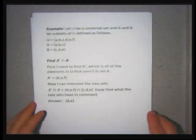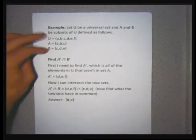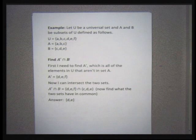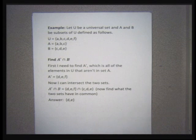I'm doing another example, a little bit harder. A new universal set has the letters A, B, C, D, E, and F. I made set A have A, B, and C, and set B have C, D, and E. I usually use U for universal set and A and B for subsets, but you can use other names.